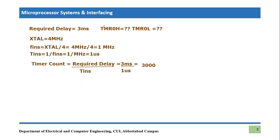Timer 0 can also be operated in 8-bit mode. In 8-bit mode it can count up to 0xFF in hexadecimal, which is 255 in decimal. In 16-bit mode it can count up to 0xFFFF, which equals 65,535 in decimal. Since we need a count of 3000, we can easily use 16-bit mode.